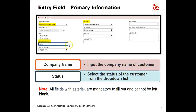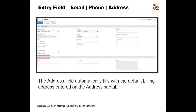You can also enter the customer's company in the Company Name field. For this instance, let's select Company. On the Status drop-down field, select Customer Closed 1 if the company is indeed a customer already, not a lead, for example. You may add a contact to this customer record. Under the Email, Phone, Address section, enter this customer's email addresses, phone, and fax numbers. The Address field automatically fills with the default billing address you entered on the Address sub-tab.